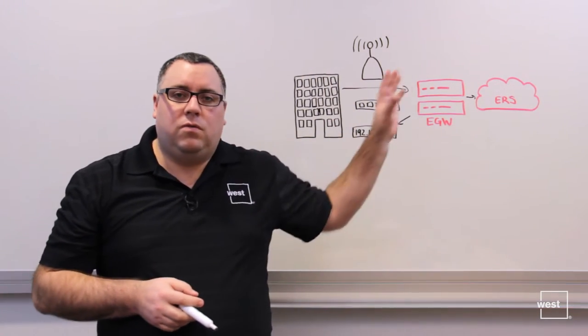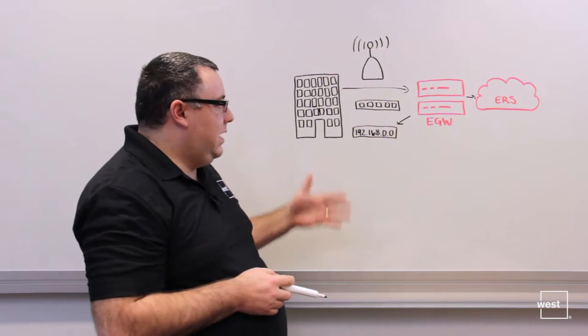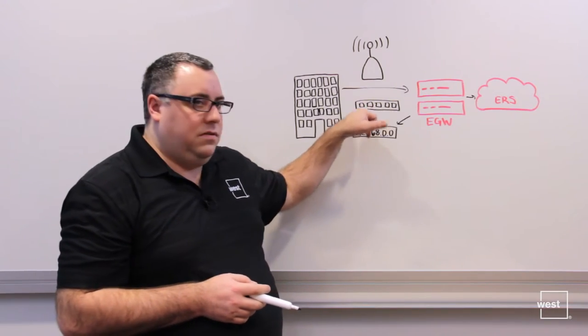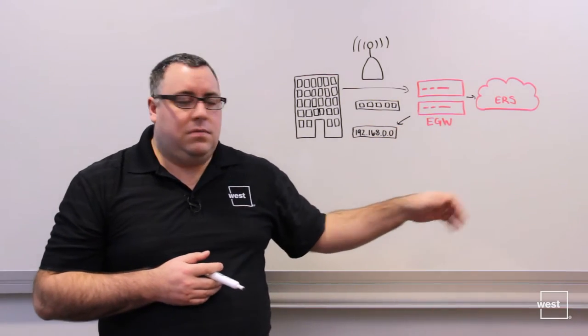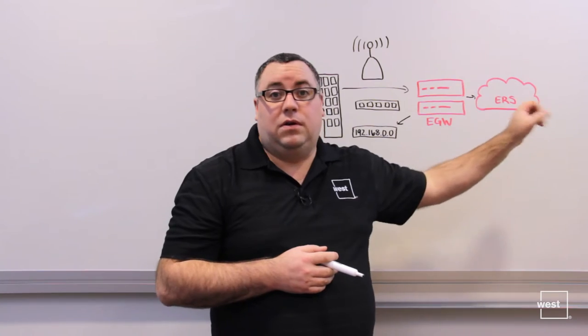In that case, your devices can be moving around and you don't have to manage their phone number. You basically say these are the static locations of my subnets, switches, and access points. As devices are moving around, the emergency gateway will automatically track them and deliver the location data and the call to the emergency routing service and out to the PSAP.